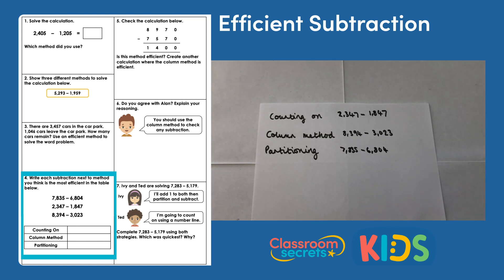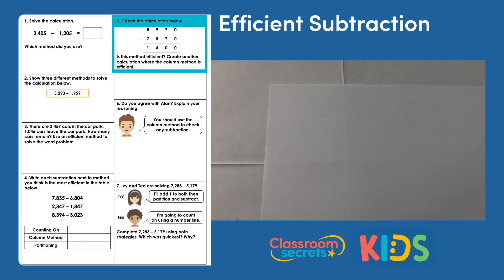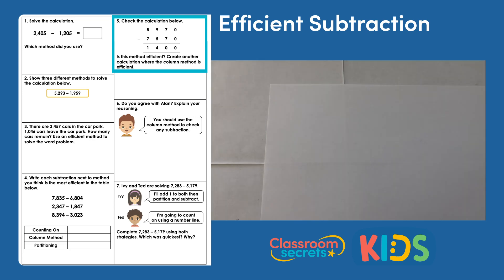As long as you're able to explain why you've chosen a method, that's absolutely fine. Question five: check the calculation 8,970 subtract 7,570 equals 1,400. Is this method efficient? For this calculation, I would say the column method is not efficient, because in the calculation itself...